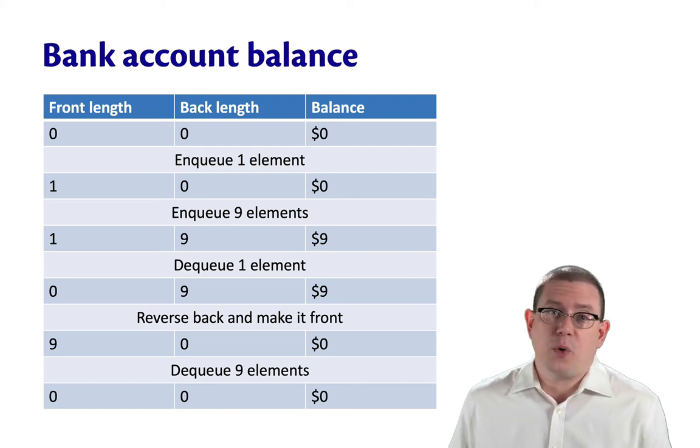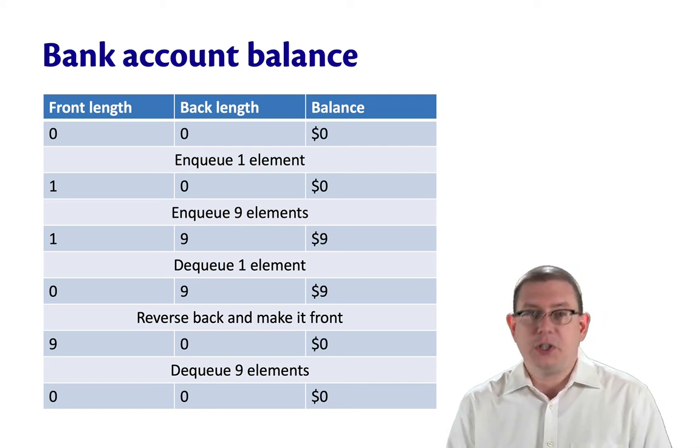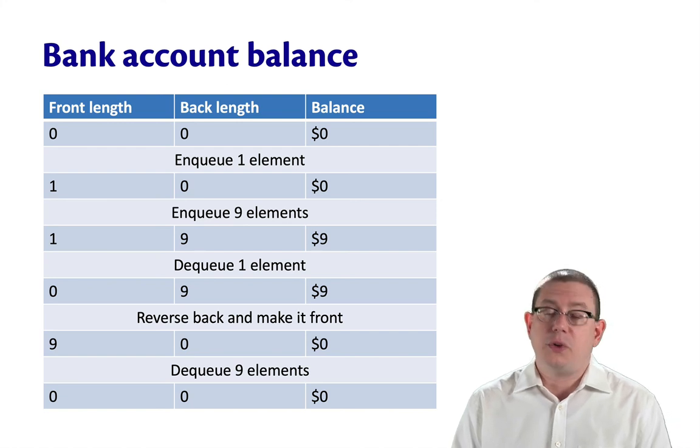At this point, we could go on and do more operations. Suppose that we finished by dequeuing nine elements. Those would all come off the front and we would never more touch our bank account balance there. It would still stay at zero.